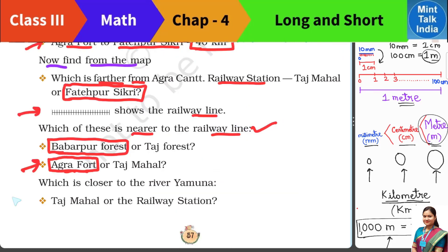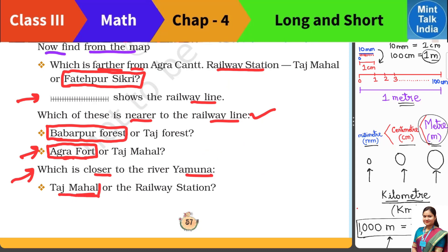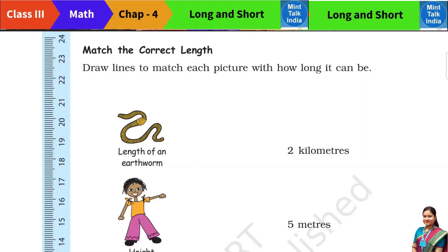The next question: which place is closer to the river Yamuna — the Taj Mahal or the railway station? Looking at the map, we can see where the Yamuna river is. Our answer is: Taj Mahal is closer to the river Yamuna.